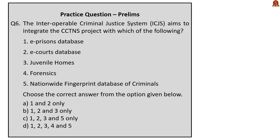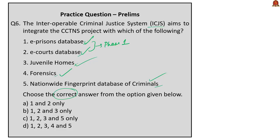Next question: The Interoperable Criminal Justice System aims to integrate the CCTNS project with which of the following — e-prisons database, e-courts database, juvenile homes, forensics, nationwide fingerprint database of criminals? From our discussion, ICJS integrates CCTNS with e-courts and e-prisons databases in the first phase, and then with forensics, prosecution, juvenile homes and a nationwide fingerprint database in a phased manner. So all items are correct, and the answer is option D — 1, 2, 3, 4 and 5.